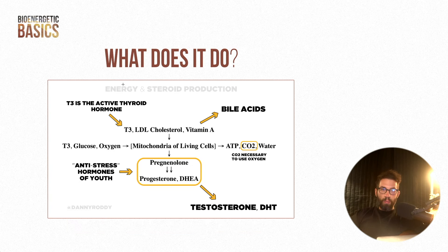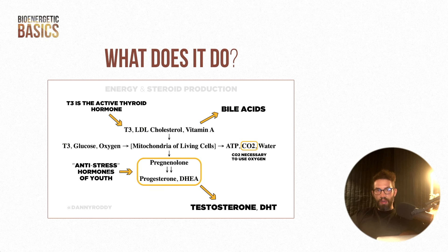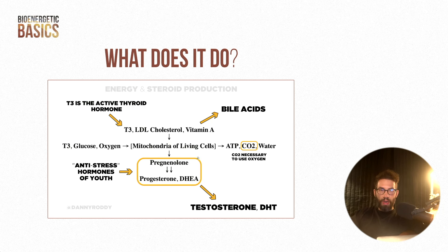Let's go over general steroid metabolism. We have T3, the active thyroid hormone, LDL cholesterol, and vitamin A. In the mitochondria of living cells, they produce pregnenolone, progesterone, and DHEA — sometimes called the anti-stress hormones of youth. From DHEA (dihydroepiandrosterone), you further metabolize into testosterone and DHT. From top to bottom you have steroid synthesis; from left or right you have energy generation. These steroids are generally proposed to protect the generation of energy.